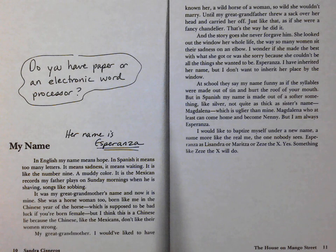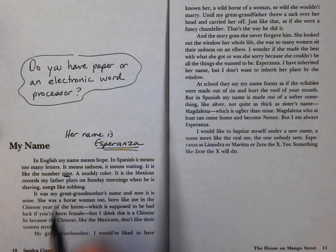Here are some thoughts about her name. In English, my name means hope. You know, it really does. In English, we know people that are called Hope, and her name is Hope. But in Spanish, in Spanish it means too many letters. It means sadness. It means waiting. It is like the number nine.